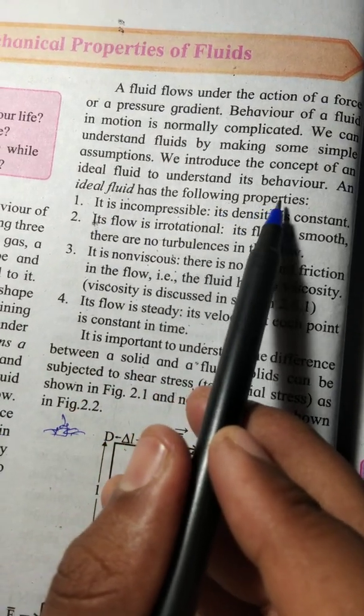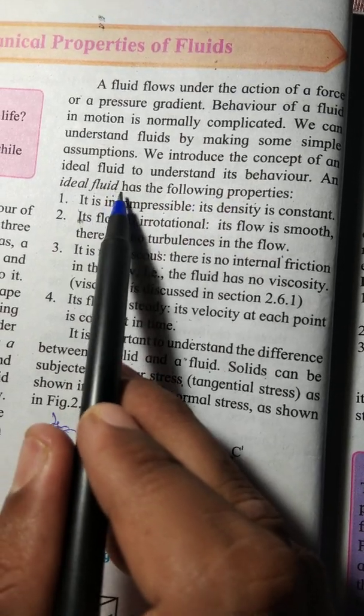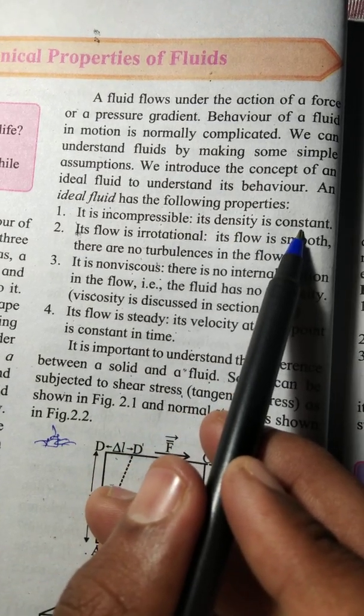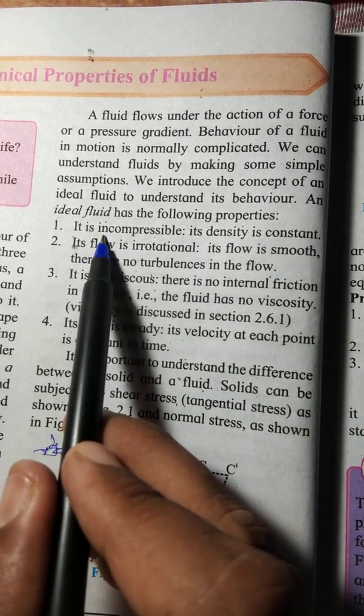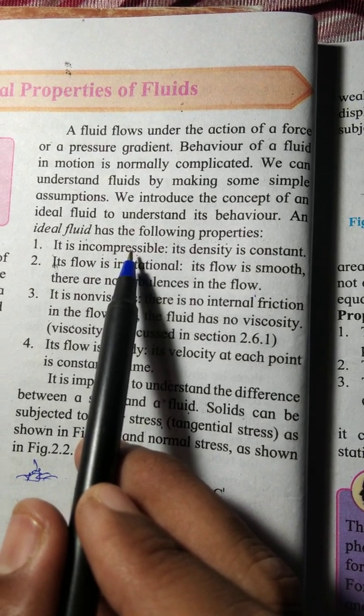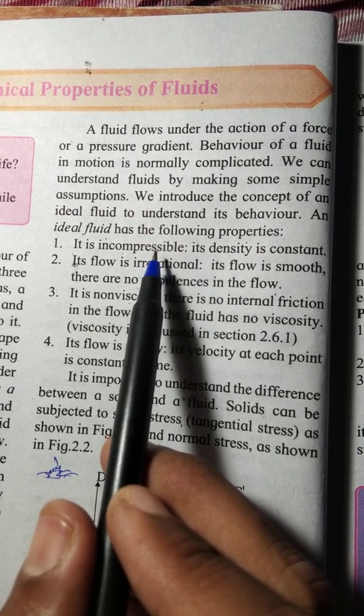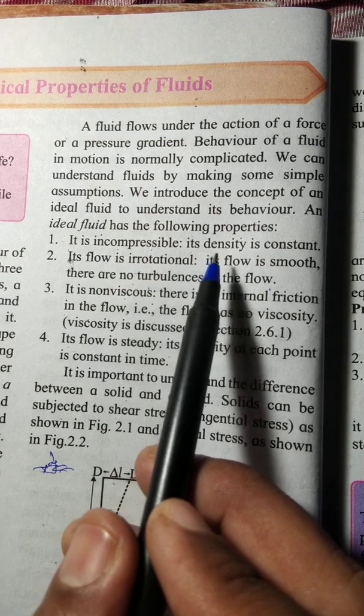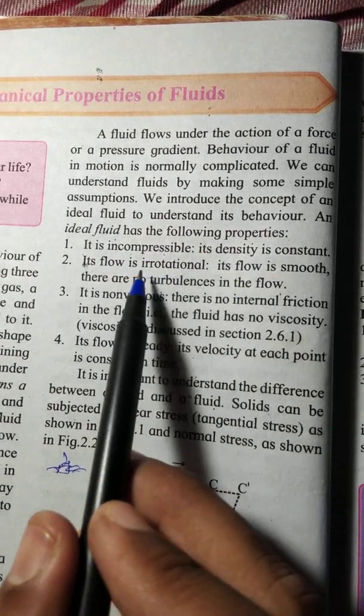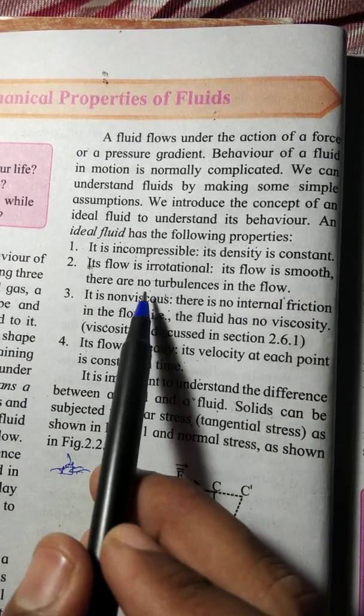The next point is properties of ideal fluid. First property is incompressible - its density is constant. It is incompressible, meaning it does not change size and shape. Its flow is irrational, meaning smooth, not turbulent.